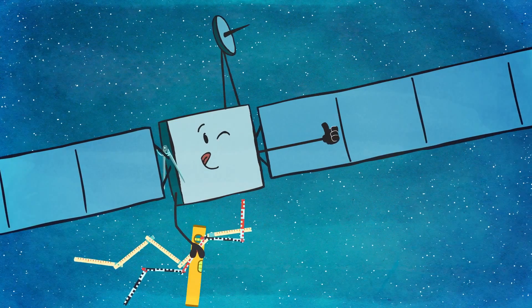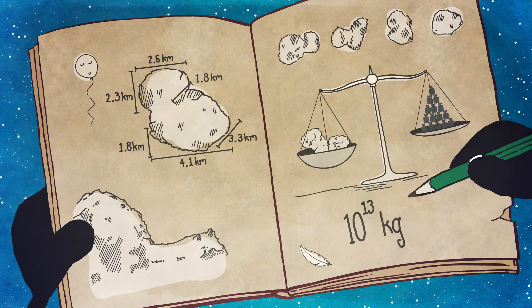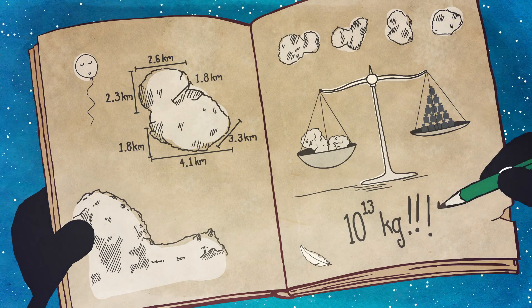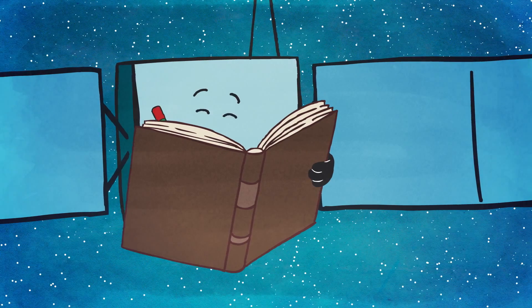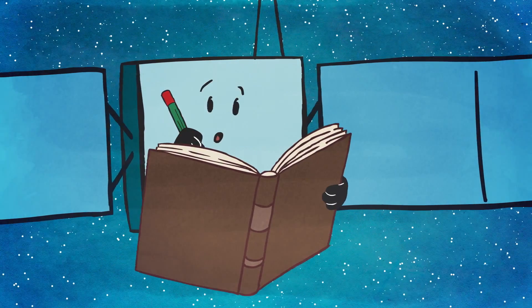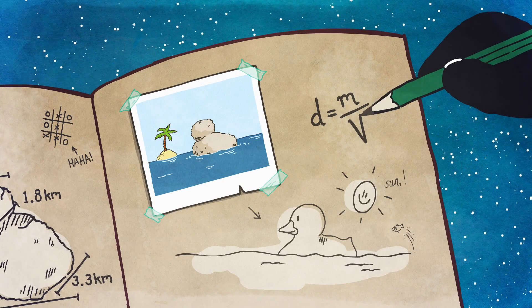It measured 4 kilometers across, and from the gravitational pull that Rosetta felt, she could calculate the mass of the comet—10 billion tons. Although the comet looked like a giant rock, it was made of something much lighter, so much so that it would float on water.